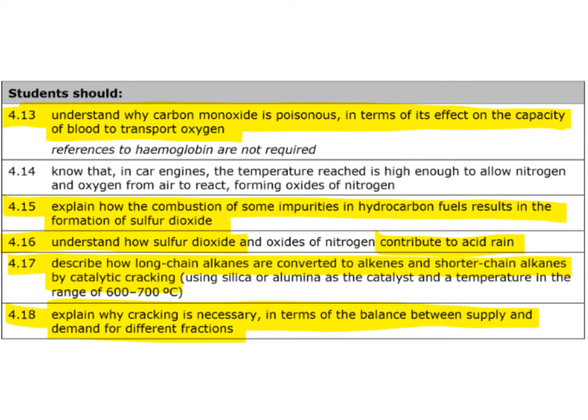Here's the second part of the specification which you need to know. We've already looked at the first point, 4.13, which is about carbon monoxide and why it's poisonous — because it reduces the capacity of the blood cells to carry oxygen.